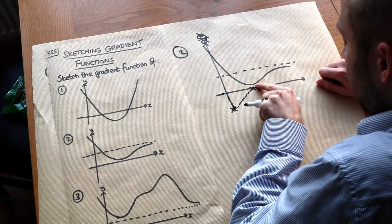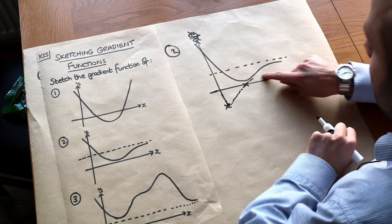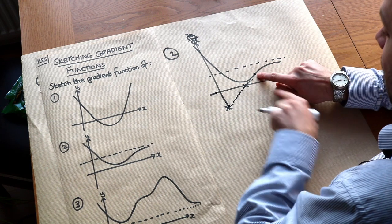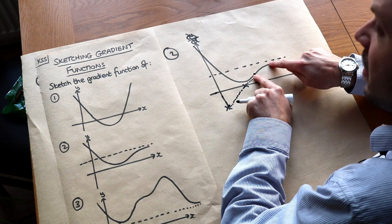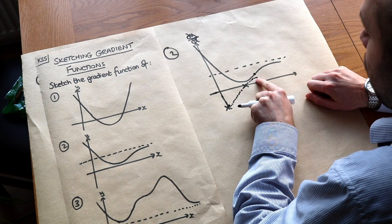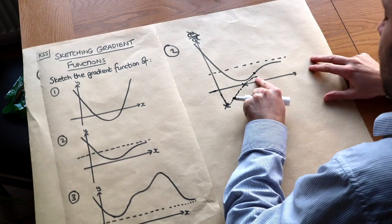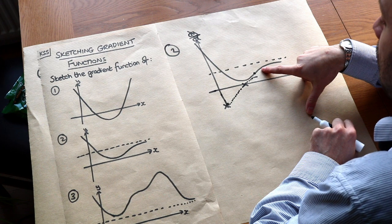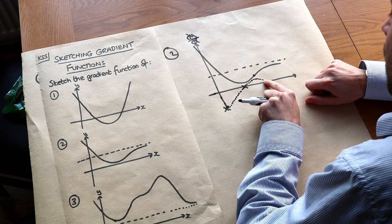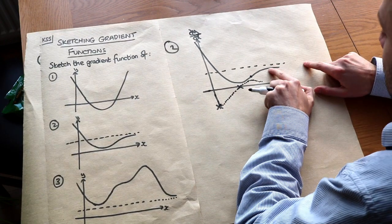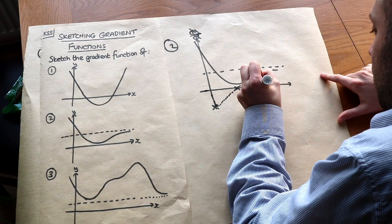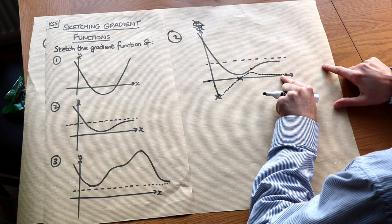Here we can see the gradient is positive and increasing. But at this point the gradient is positive but it's not changing — because up to this point the gradient is increasing, but after this point the gradient is still positive but it's decreasing. When that happens we actually get a turning point on our gradient function, so the gradient of your gradient function is zero. Just after this point we can see the gradient is positive but decreasing towards zero, so our gradient function is still positive but gradually approaching zero. And here this curve is becoming flat — the gradient is still technically positive but getting closer and closer to zero, so our gradient function should be positive but getting closer and closer to zero.